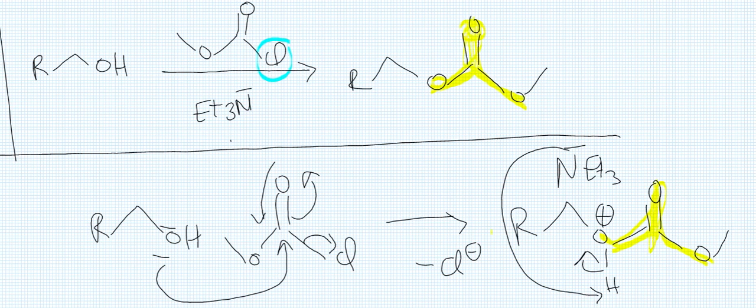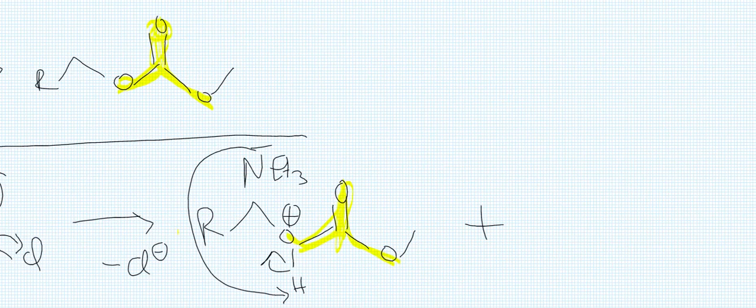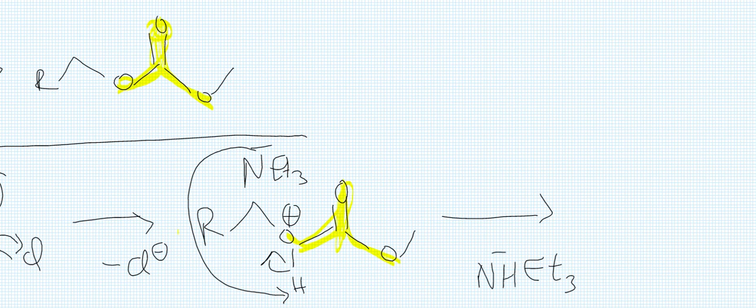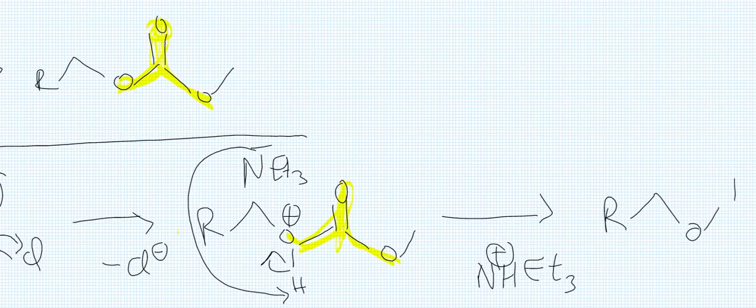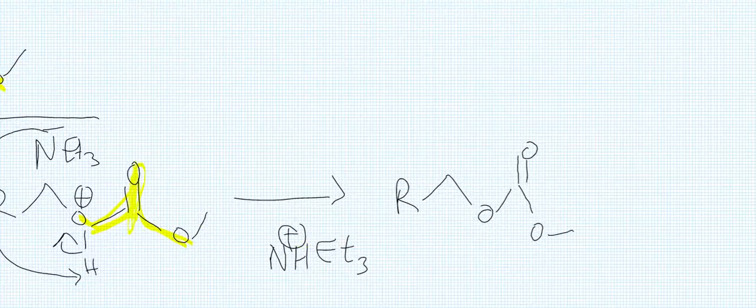So we grab the hydrogen and once we grab a hydrogen, we form ET3HN+, the ammonium, and we form our protected alcohol. So a carbonate.